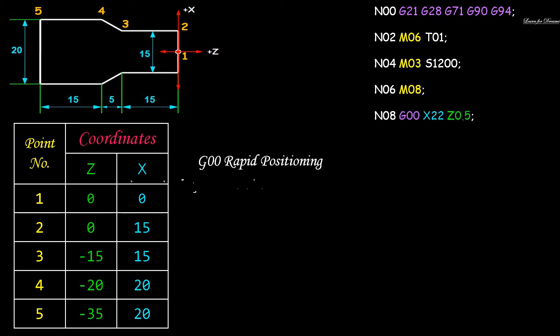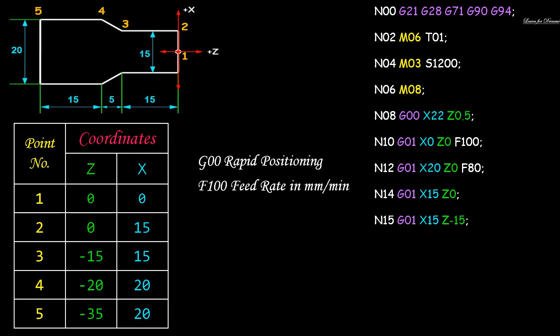Then N08 G00 X22 Z0.5 F100. G00 is rapid positioning and F100 is feed rate in mm per minute. Now we are going to use coordinates 2, 3, and 4 one by one with G01, that is line interpolation, starting with facing operation and then turning operation. Now we have reached 0.4, toh hume apna required design mil gaya hai.